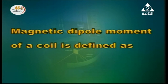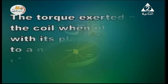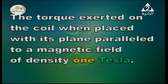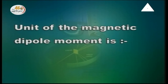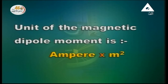The quantity IAN gives the magnetic dipole moment (MD) of the coil, so MD = IAN. The magnetic dipole moment of the coil is defined as the torque exerted on the coil when placed with its plane parallel to a magnetic field of intensity 1 Tesla. The torque is numerically equal to the magnetic dipole moment when B = 1 Tesla. The unit of magnetic dipole moment is ampere meter squared. This brings us to the end of this edition — until we meet again, my best wishes to you all.